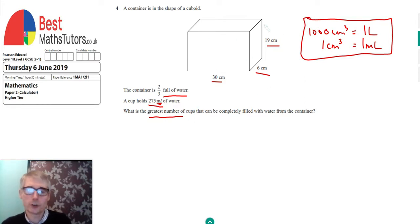The first thing to do is find the volume of the cuboid. The volume is given by length times width times height, the standard formula. The length is 30 times the width, which is 6, times the height, which is 19. Putting that into the calculator, because this is the calculator paper, we get 3420.